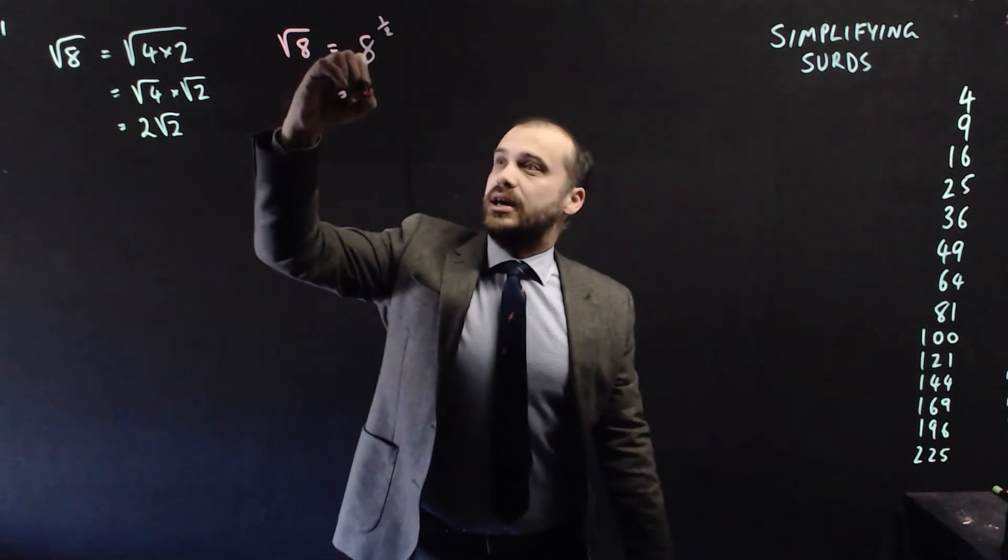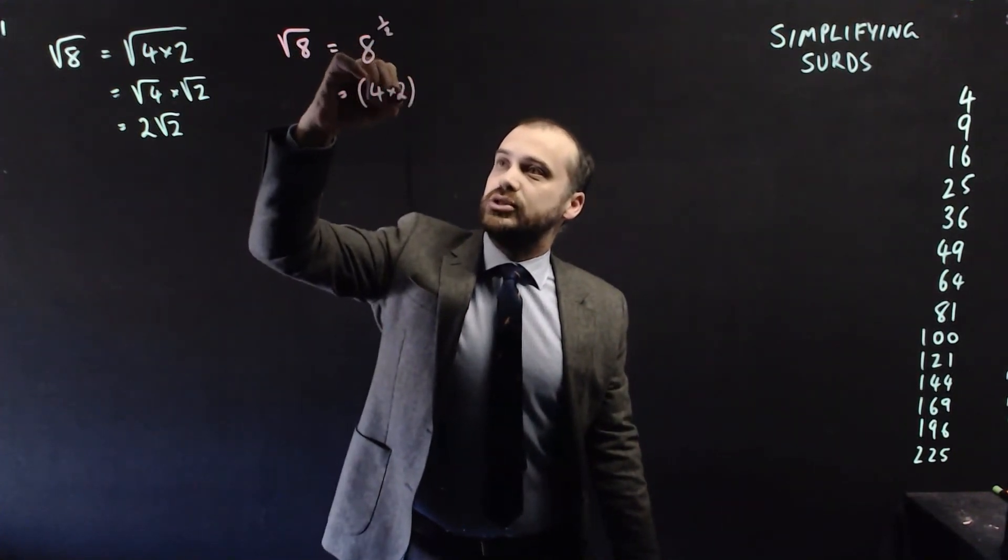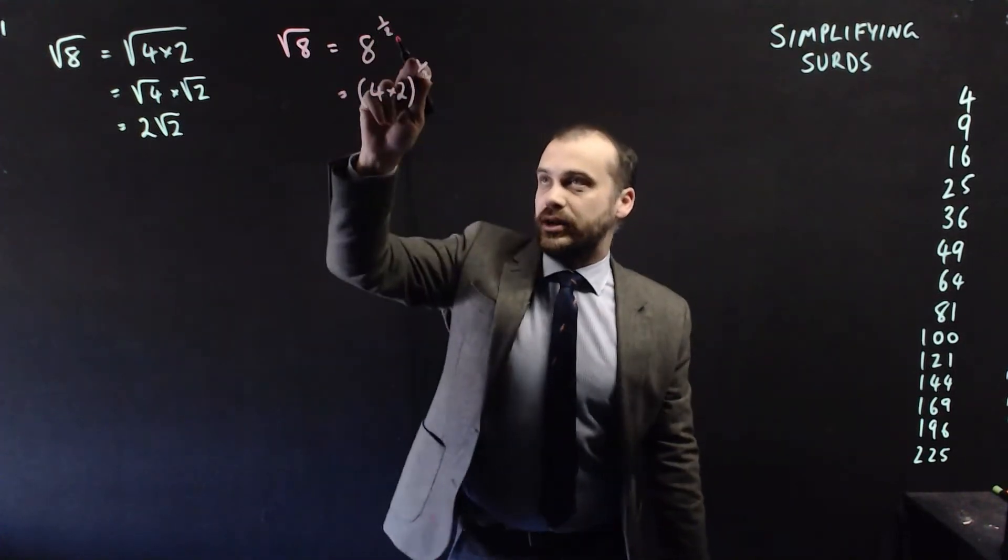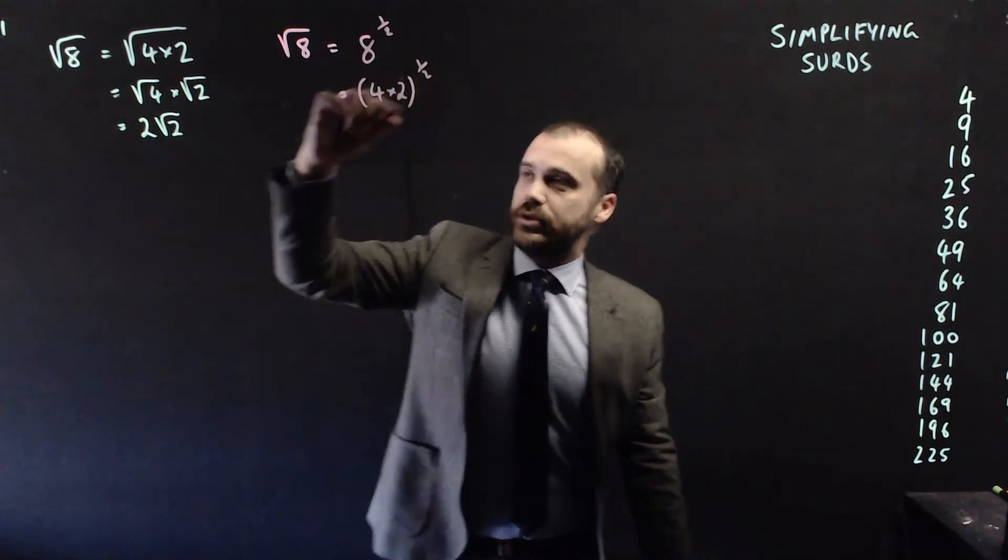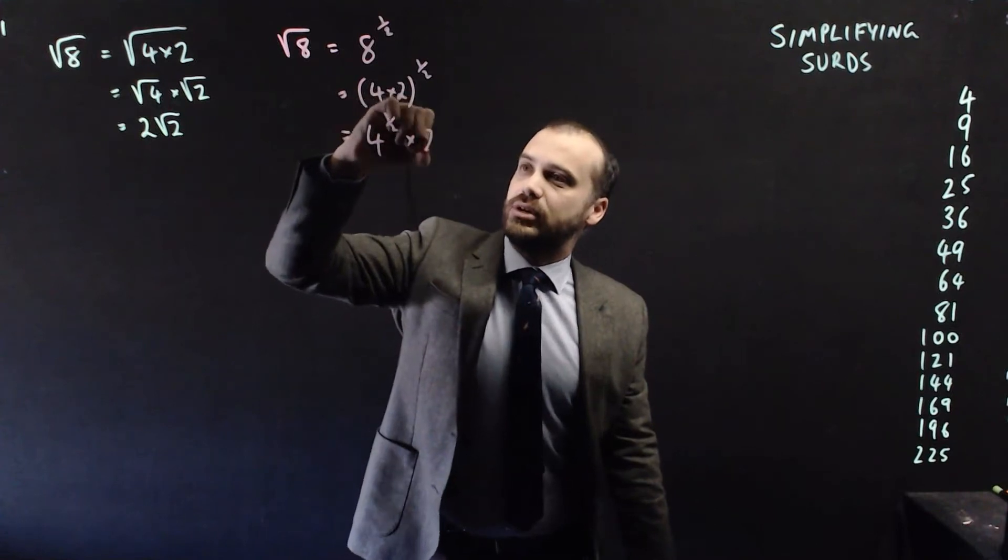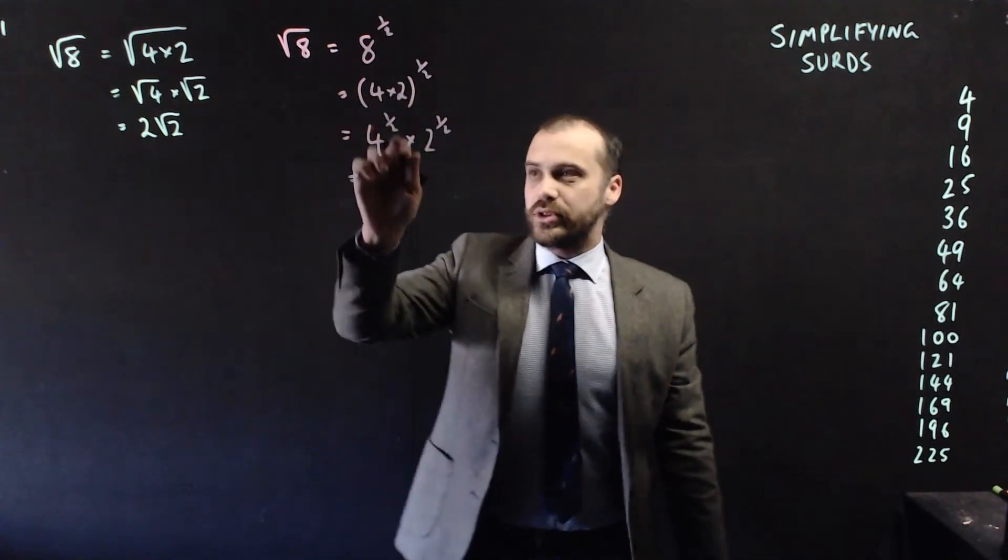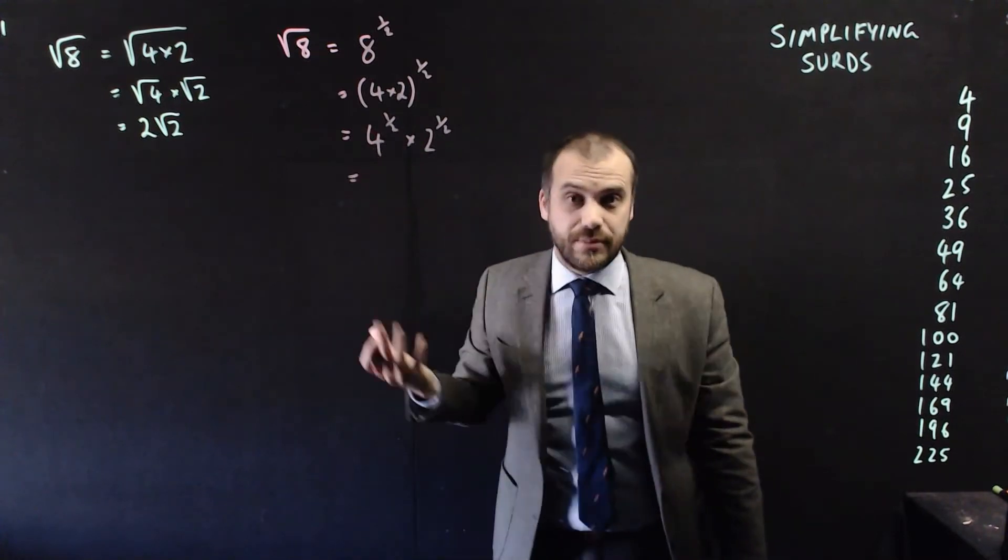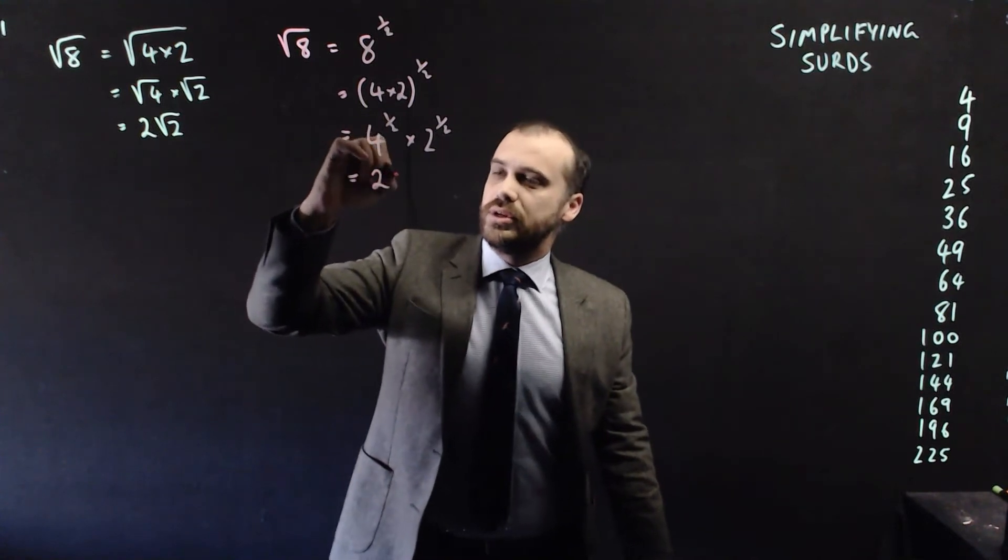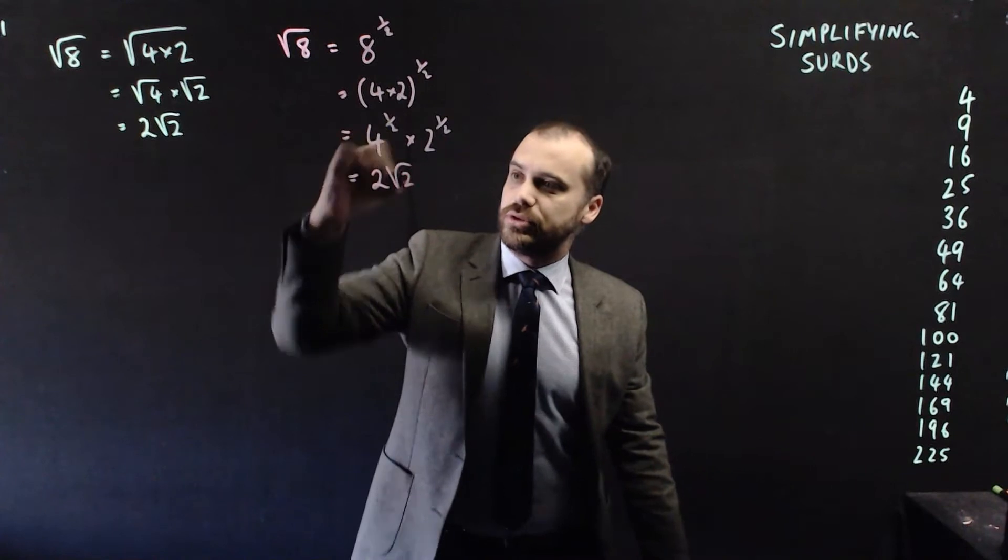So I can say that this is the same as 4 times 2 to the power of 1 half. And then I can use my index laws to say that's the same as both of those raised to the power of 1 half: 4 to the power of 1 half times 2 to the power of 1 half. And I now know that 4 to the power of 1 half is the same as the square root of 4, which is 2 times the square root of 2.